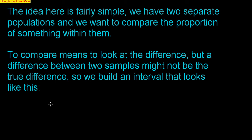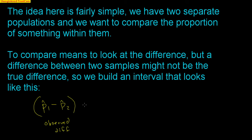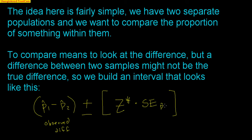The confidence interval is very simple. We start off by asking what was the difference that we saw? So we take our first sample's proportion and subtract the other sample's proportion — that is the observed difference. This is the difference between the two proportions we saw. Then we add and subtract a margin of error, which is a Z-star times the standard error of the difference. Finding that standard error of the difference is going to be a little bit tricky, but I'll explain as the video goes on.